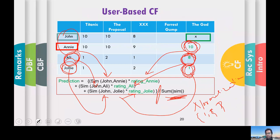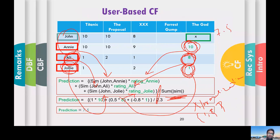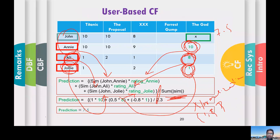You add them all up. Once you plug in the values, you'll see the prediction is 7.5. This is not very surprising: the users most similar to John — like Annie, who gave The Guard a 10 — push the score up, while Julie, who is highly dissimilar and rated it 1, has less influence. So 7.5 means John is going to like this movie.